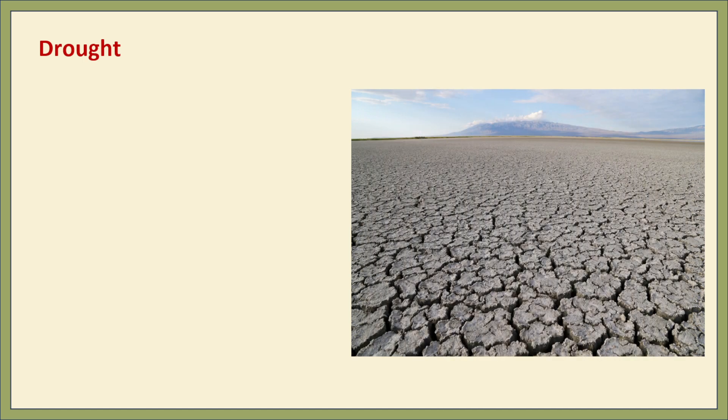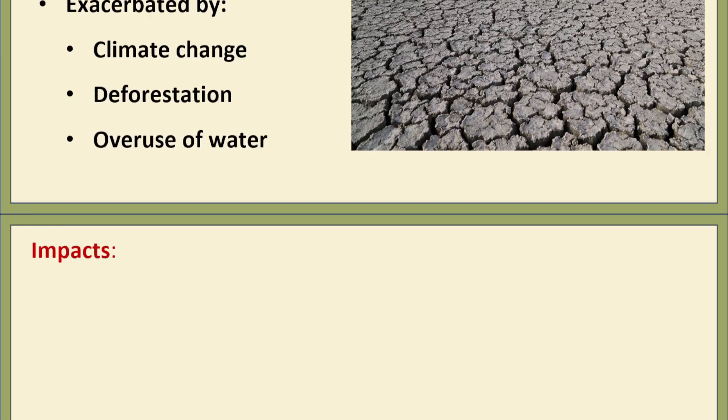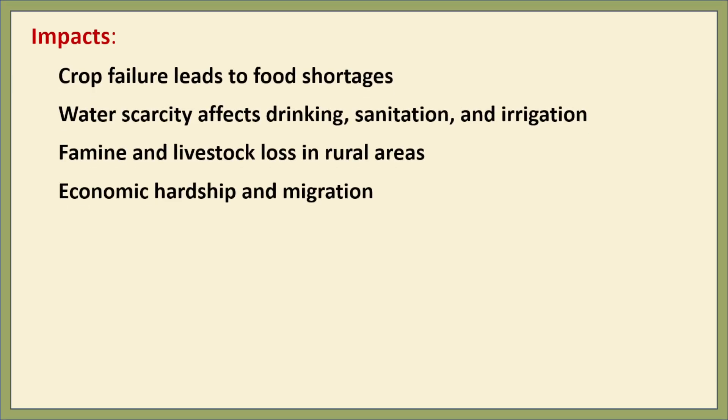In contrast to floods, we also face drought. Drought occurs where there is a long-term shortage of rainfall, and it is made worse by global warming, loss of forests and overuse of water resources. Its impacts include crop failure leading to food shortages, water scarcity affecting drinking, sanitation and irrigation, and famine and livestock loss in rural areas.